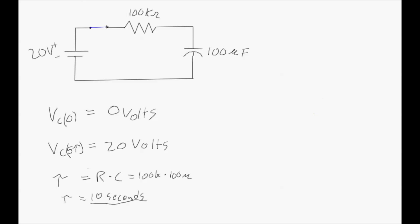The time constant is R times C — resistance times capacitance — in this diagram equal to 10 seconds. So after five times that, 50 seconds, it will be at steady state, fully charged at 20 volts.